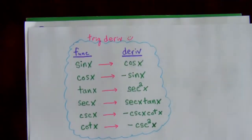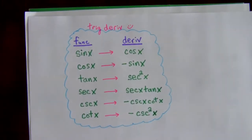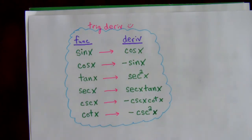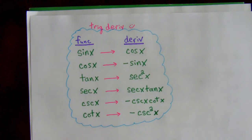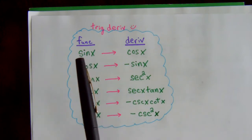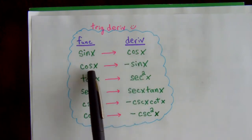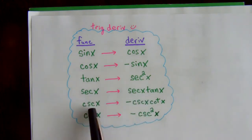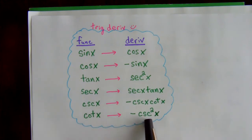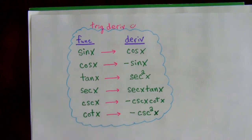Pause the video and write down all six basic trig functions and their derivatives. Here are the originals and their derivatives — you need to have this list memorized. The derivative of sine is cosine, the derivative of cosine is negative sine, the derivative of tangent is secant squared, the derivative of secant is secant tangent, the derivative of cosecant is negative cosecant cotangent, and the derivative of cotangent is negative cosecant squared.